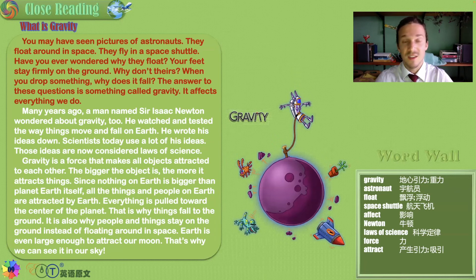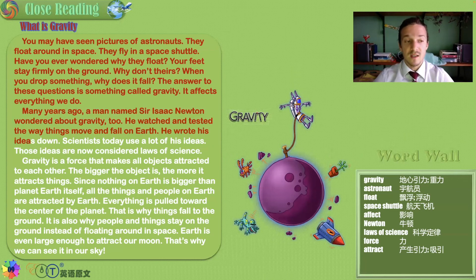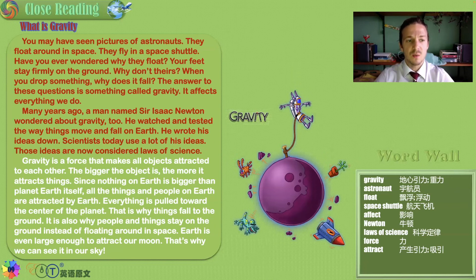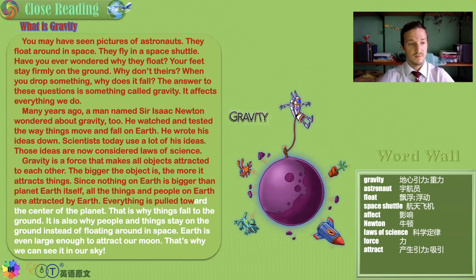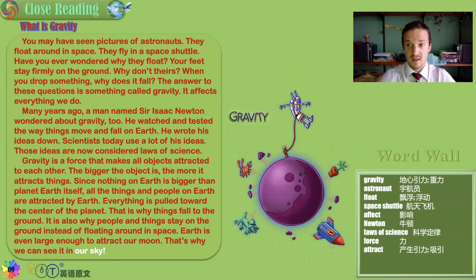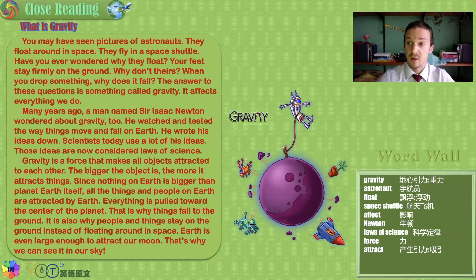Many years ago, a man named Sir Isaac Newton wondered about gravity. He watched and tested the way things move and fall on Earth and wrote his ideas down. Scientists today use a lot of his ideas, which are now considered laws of science. Gravity is a force that makes all objects attracted to each other. The bigger the object, the more it attracts things. Since nothing on Earth is bigger than planet Earth itself, all things and people on Earth are attracted by Earth, pulled toward the center of the planet, and that is why things fall to the ground.